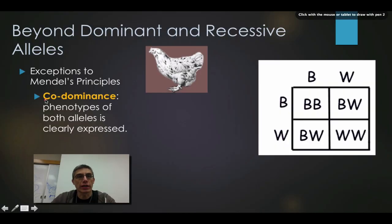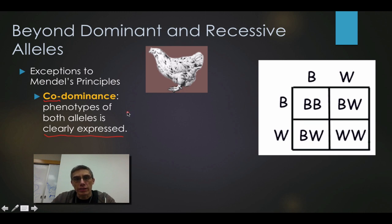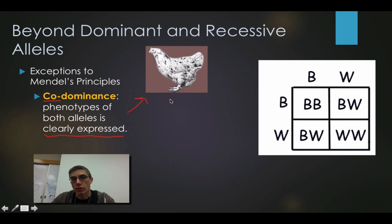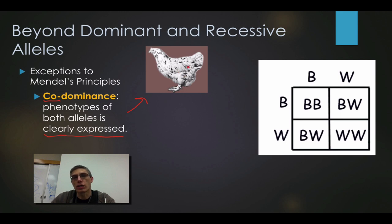Another exception to Mendel's principles is co-dominance. That prefix 'co-' is really important, because what we have is two alleles that are very clearly expressed in the organism. For example, we have a chicken that has both white and black feathers — an allele that codes for black feathers and an allele that codes for white feathers. This chicken appears spotted, meaning both alleles are very clearly expressed. Unlike incomplete dominance where we had an intermediate color, here both characteristics are represented in one individual.